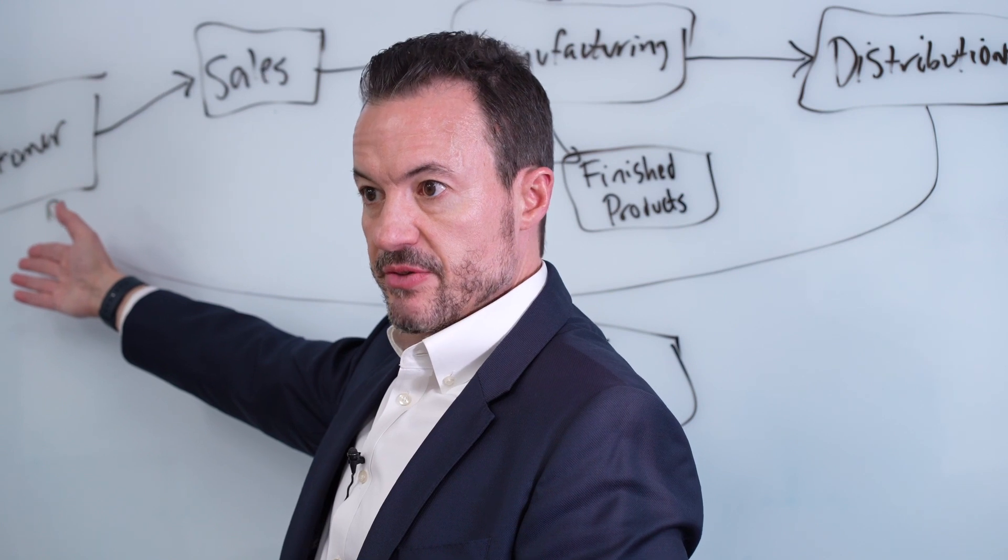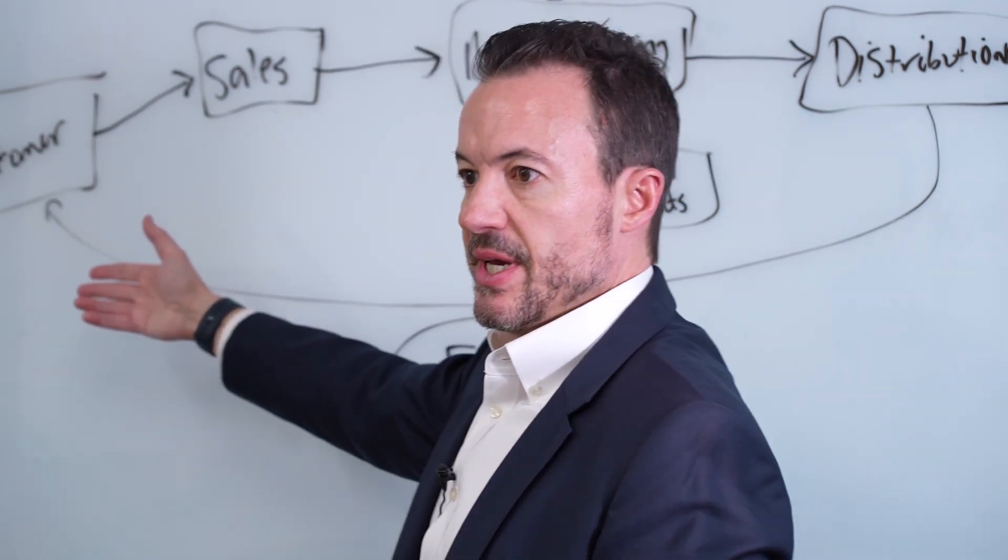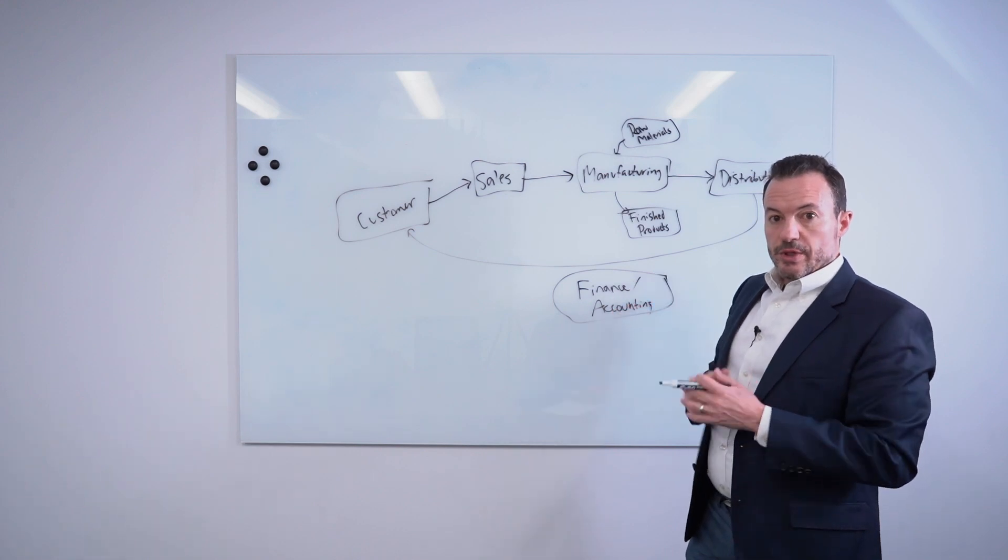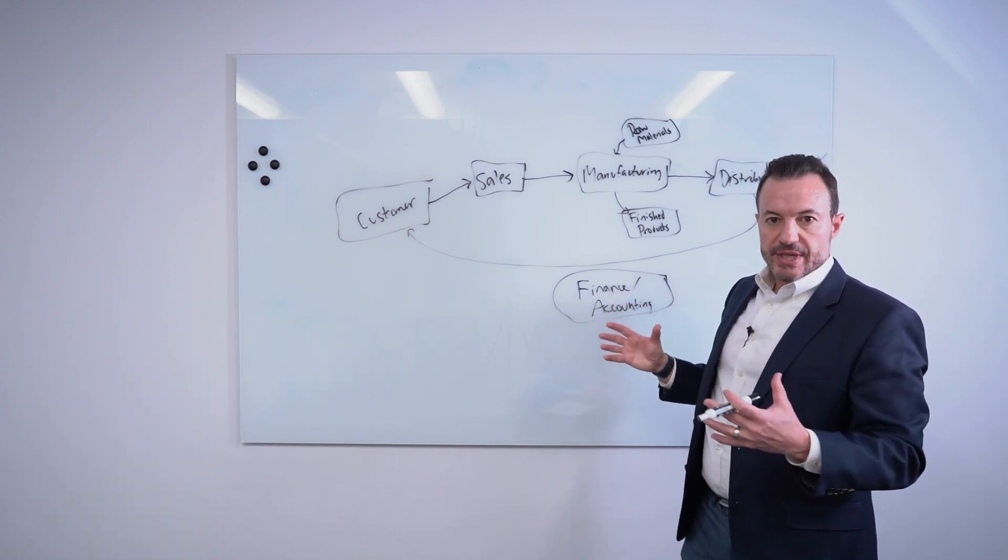So data is being accumulated throughout the process from customer all the way through manufacturing, closing the books and accounting for all the transactions that have happened. And then ultimately the information or the products going back to the customer will ultimately produce data as well. For example, when the customer receives or how the customer receives the product is going to create a certain subset of data.